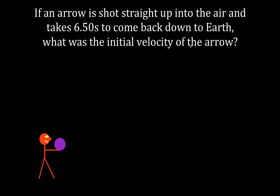That means we're going to take some object, an arrow, project it straight up, stops, comes back down to the same place, takes 6.5 seconds to do that. What must the initial velocity have been to achieve that time?